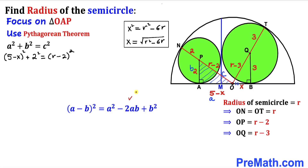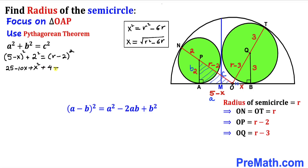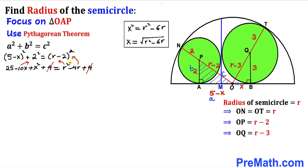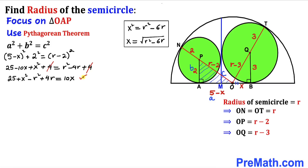Expanding using the identity (a − b)² = a² − 2ab + b²: we get 25 − 10x + x² + 4 = r² − 4r + 4. The 4 on each side cancels. Moving −10x to the right and r² and −4r to the left gives us: 25 + x² − r² + 4r = 10x.